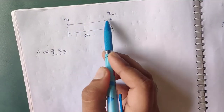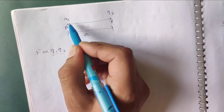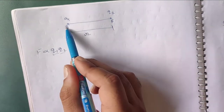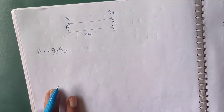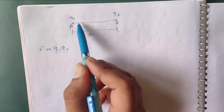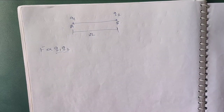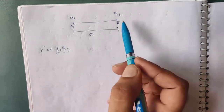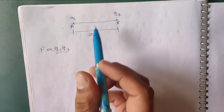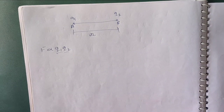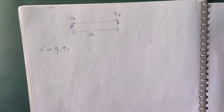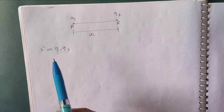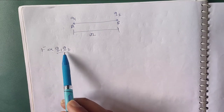Consider we have two point charges placed at point A and at point B. Q1 is placed at A and Q2 is placed at point B, and both the charges are separated by a distance R. Coulomb found that the force between these two charges — which may be attractive or repulsive — is directly proportional to the product of the magnitude of the charges Q1 and Q2.